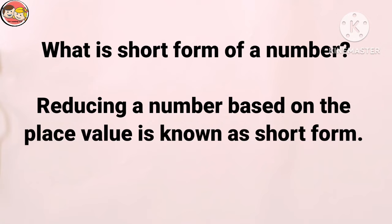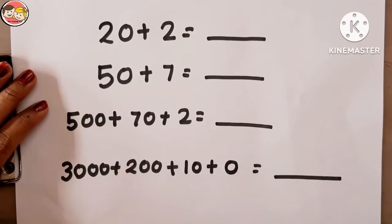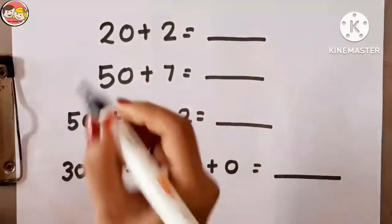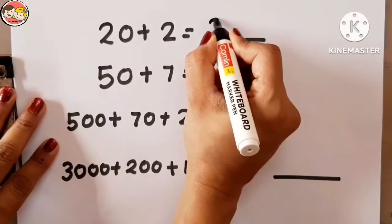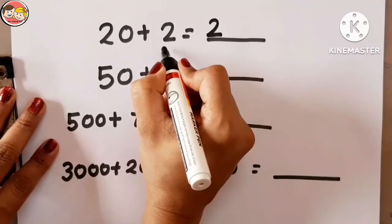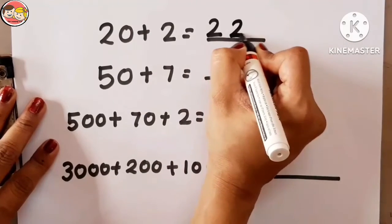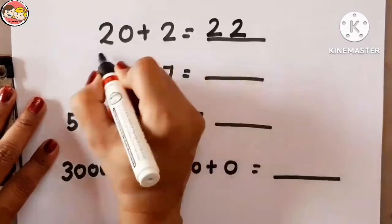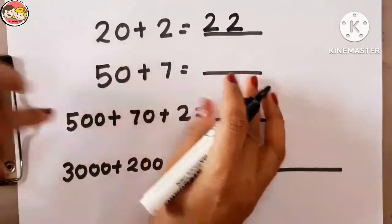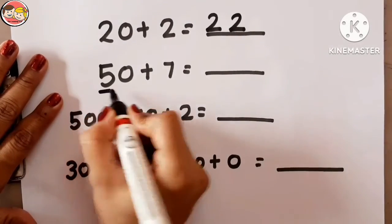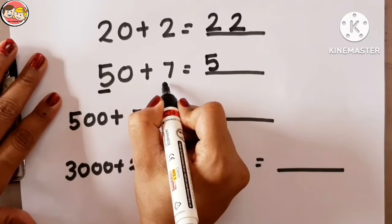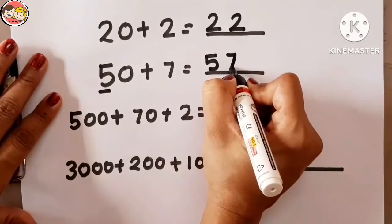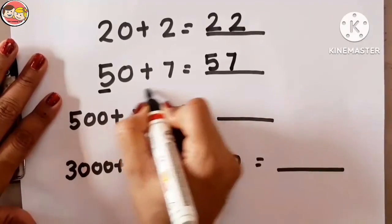Now let's learn how to write the short form of a given expanded form. Look here and observe carefully. Here the expanded form is 20 + 2. How many tens are there? 2 tens, means 2 — so write 2 here. How many ones are there? 2 — so write 2. So 22 is the short form. Next example: how many tens are there? 5 — so write 5. How many ones? 7 ones — so write 7. So 57 is the short form of this expanded form.